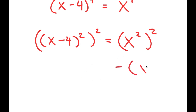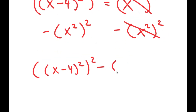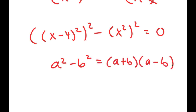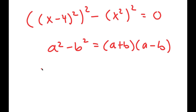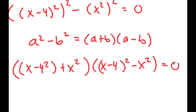Now I'm going to subtract x to the power of 2, to the power of 2 on both sides. So those two cancel out, and I get (x minus 4) squared to the power of 2 minus x squared to the power of 2 is equal to 0. Now if I have something in the form a squared minus b squared, this is equal to (a plus b) times (a minus b). So now I get (x minus 4) squared plus x squared times (x minus 4) squared minus x squared is equal to 0.